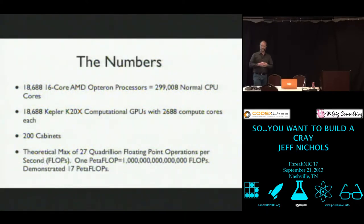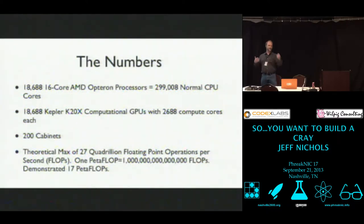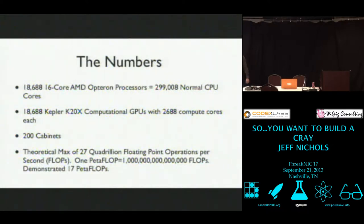There are 200 cabinets that compose this machine, and it has a theoretical maximum — if you could get all that going in the same direction — of 27 quadrillion floating point operations per second. A floating point operation is a flop: that's 2.5 plus 2.5 equals 5.0, that plus is a floating point operation. A petaflop is what we call a quadrillion flops. So that's thousands, millions, billions, trillions, quadrillion.